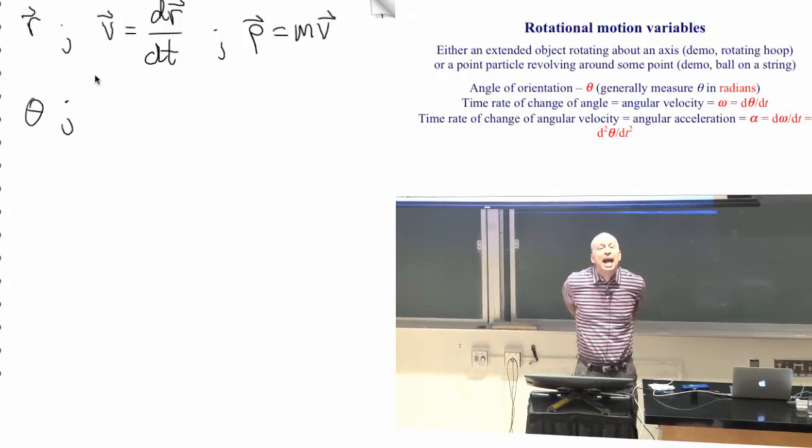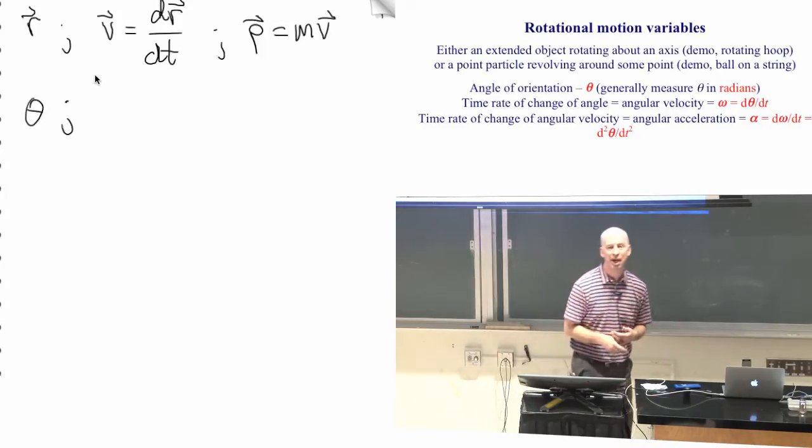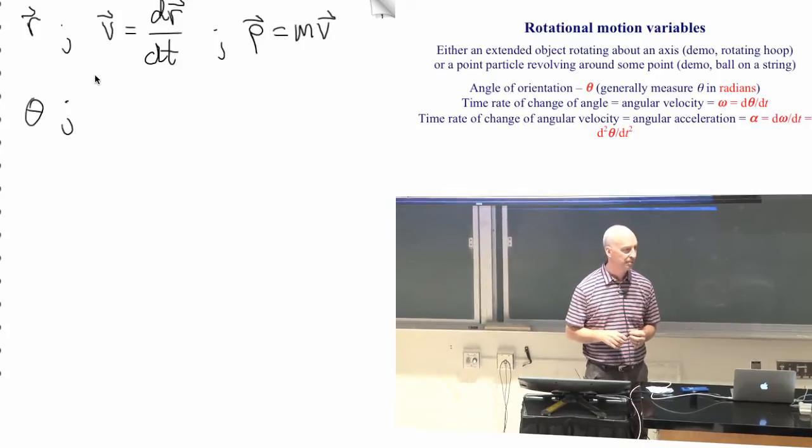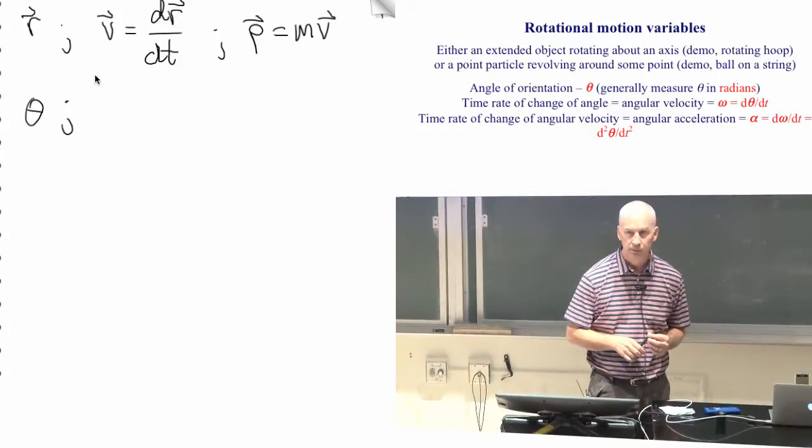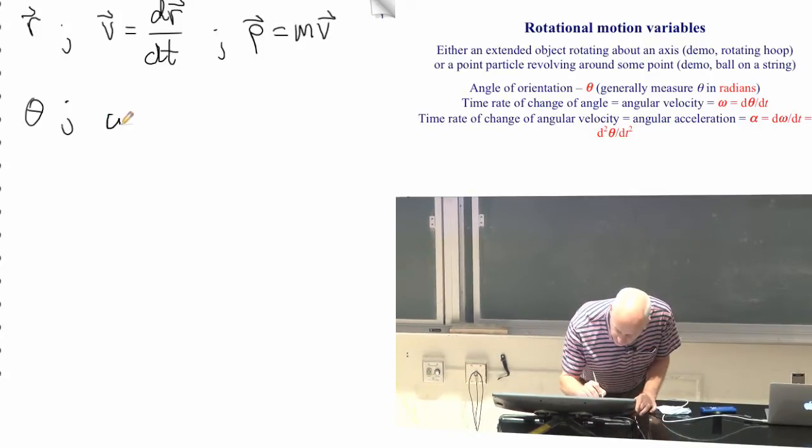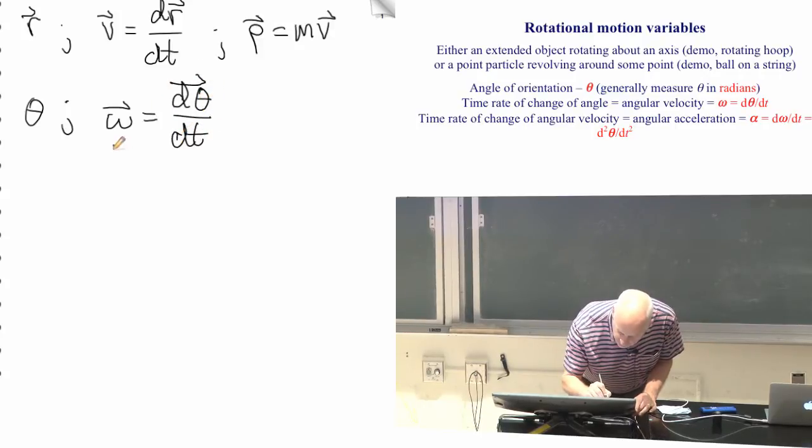So there's an angle that tells you not about the location of the object. The location of the object is given by a position vector. The angle tells you about the orientation of the object.